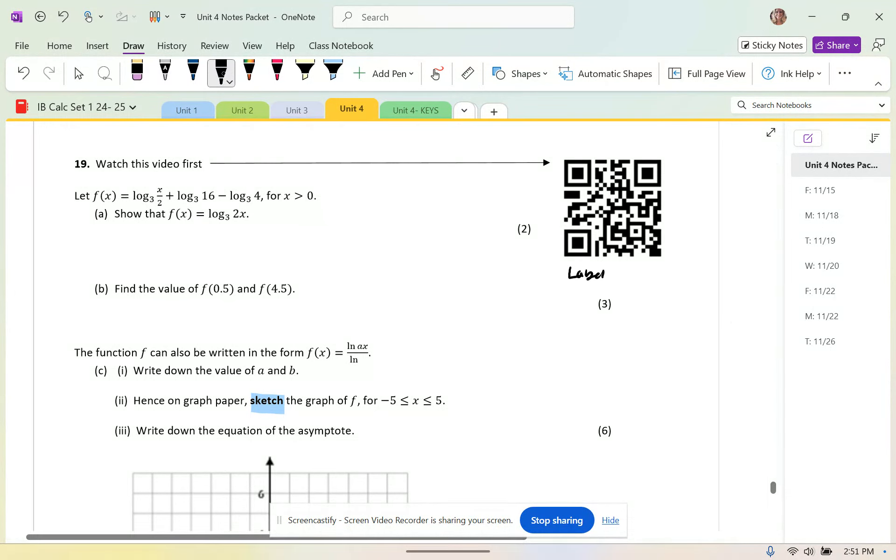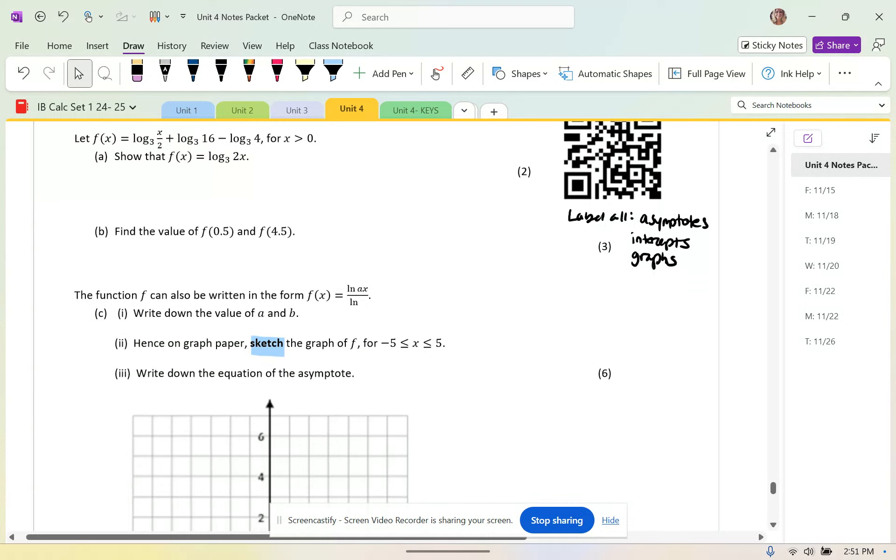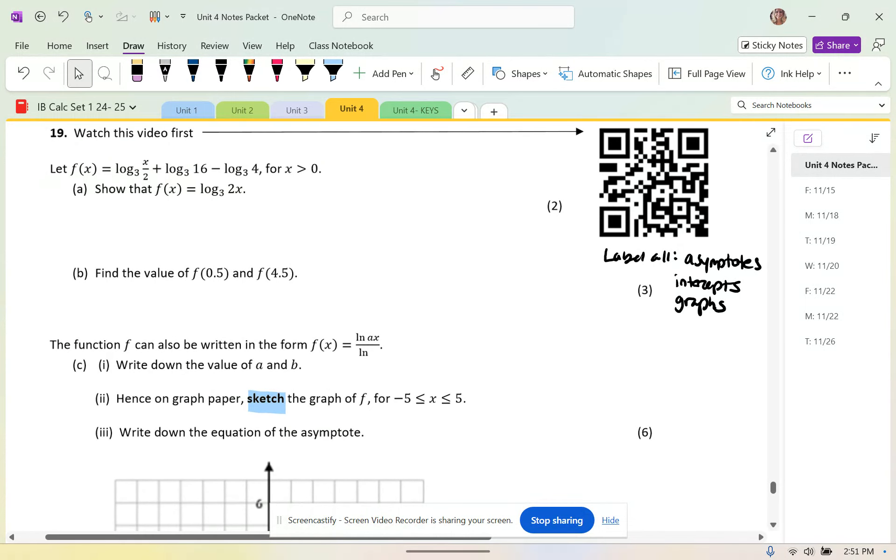When you sketch without a calculator, you need to label all asymptotes, intercepts, and the graphs, like if there's more than one graph on there, and it doesn't have to be perfect. You're just making a sketch of it.